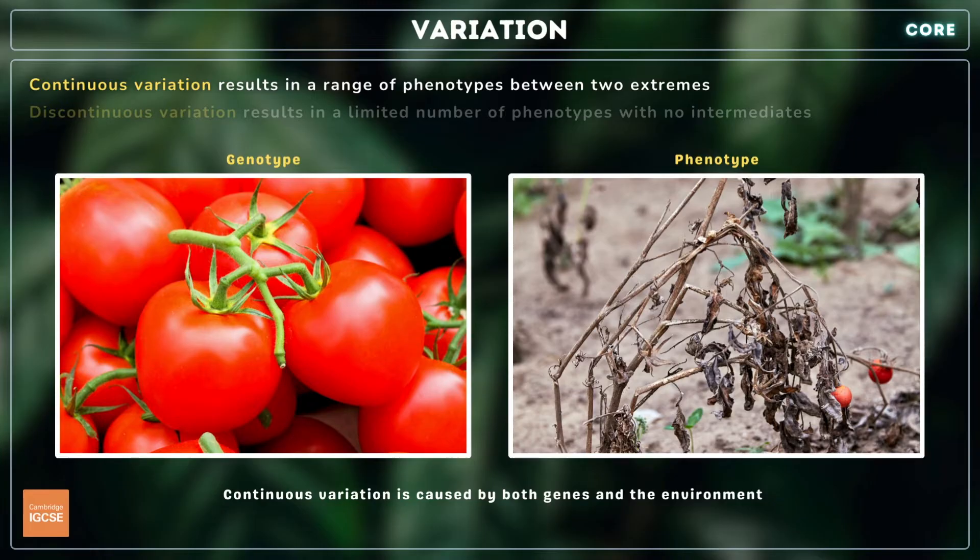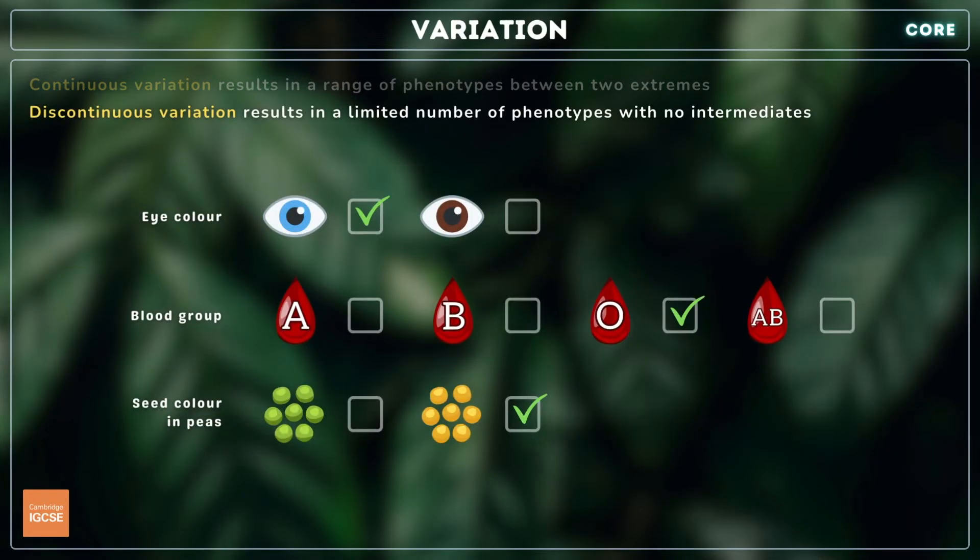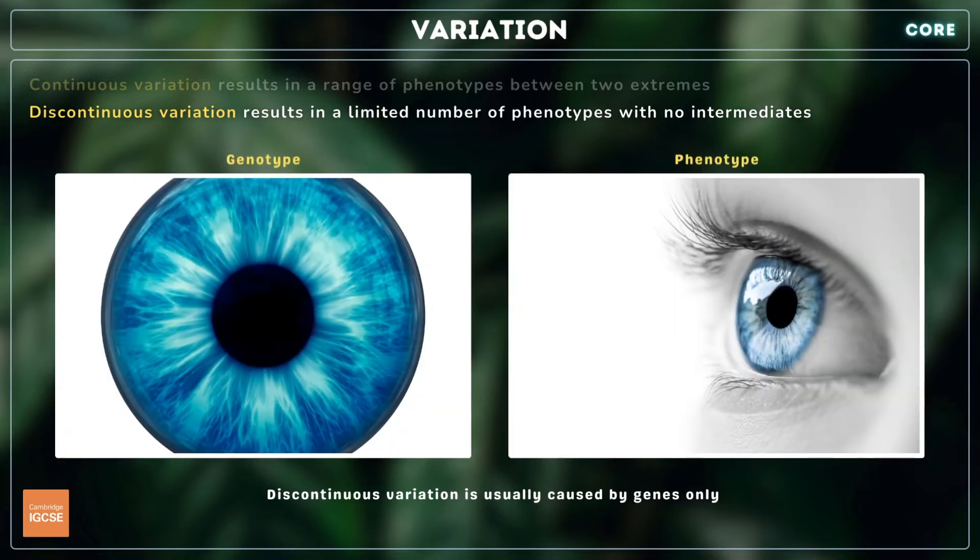Discontinuous variation, by comparison, results in a limited number of distinct phenotypes with no intermediates. Examples include eye colour, the human ABO and AB blood groups, and seed colour in peas. Discontinuous variation is usually caused by genes only, meaning it cannot be influenced by the environment. For example, it's not possible to change your eye colour by altering your diet or exercise habits.